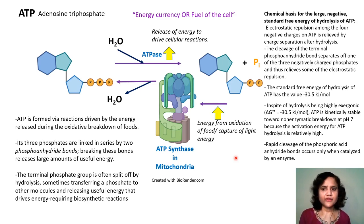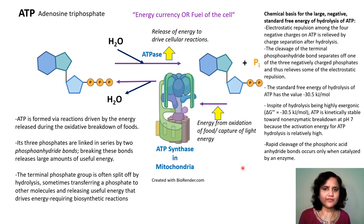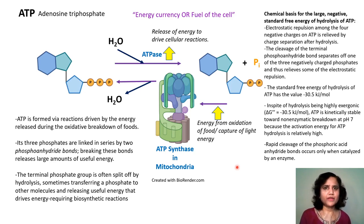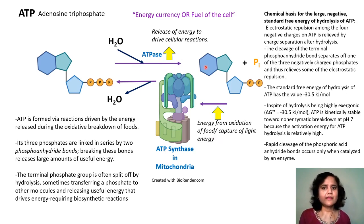The standard free energy of hydrolysis of ATP has a value of minus 30.5 kilojoules per mole. In cells this value is even more negative because the concentrations of ATP, ADP and Pi are lower. In spite of this negative delta G value, ATP is kinetically stable towards non-enzymatic breakdown at pH 7 because the activation energy for ATP hydrolysis is relatively high, so it doesn't spontaneously occur — it can only occur when catalyzed by an enzyme referred to as an ATPase.